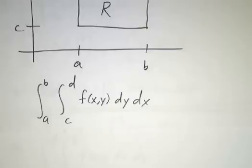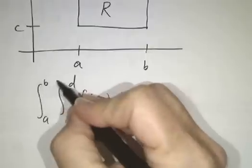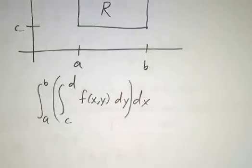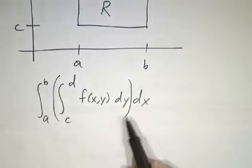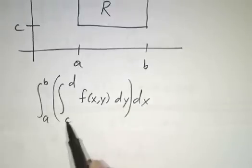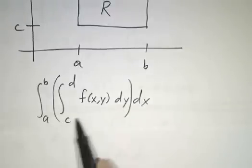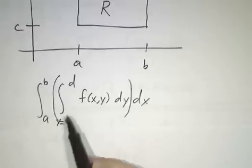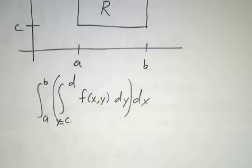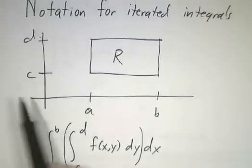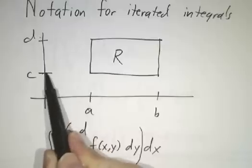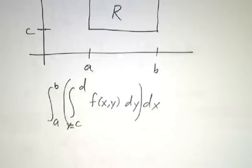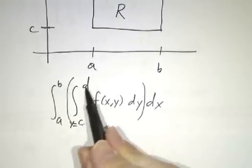There's meaning to writing y first. Whenever you see an iterated integral like this, you should imagine parentheses in there. The 'dy' says the first integral — the inner integral — is over y. So the starting value for y is c, and the ending value is d. That's just what we had in our picture: the bottom of the rectangle is at c, the top is at d. So the limits for y are the bottom and the top.